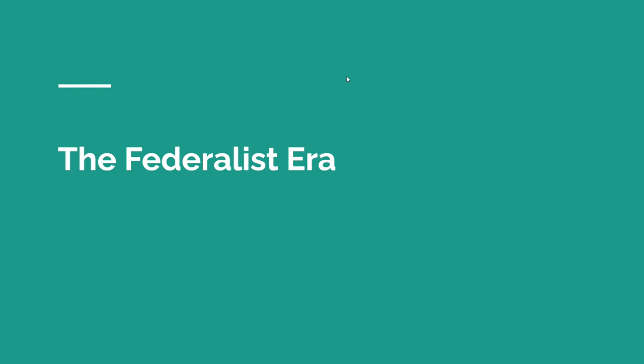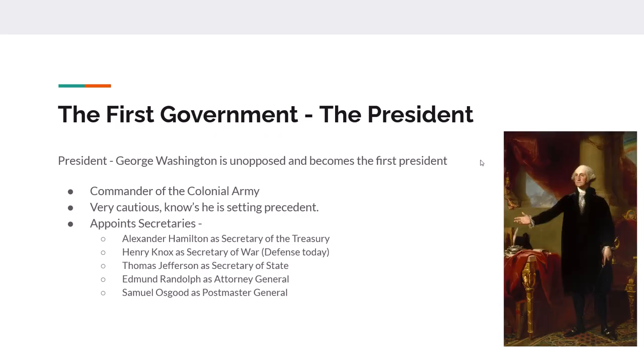The first part of this lecture is the Federalist Era. This is the era that happens right after the Constitution is agreed to and goes into effect. I'm going to start with the Executive Branch. The very first president is none other than George Washington. George Washington runs completely unopposed. He is chosen unanimously and he is very cautious and careful in everything he does — he's the first, and he wants to set a good example.